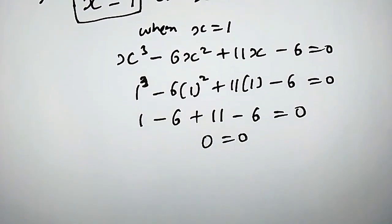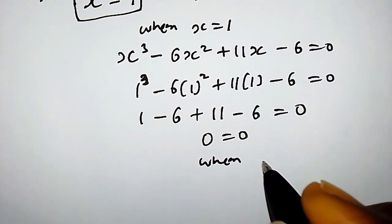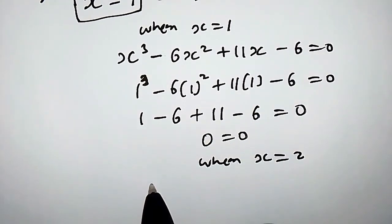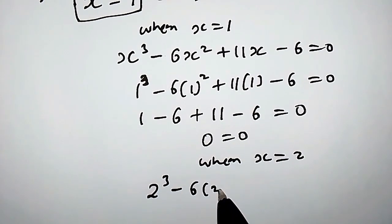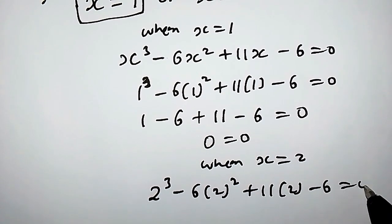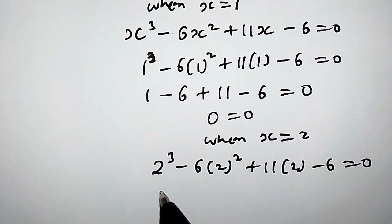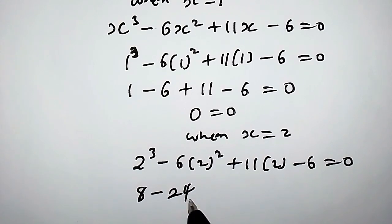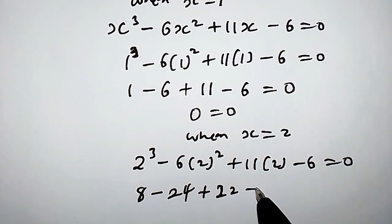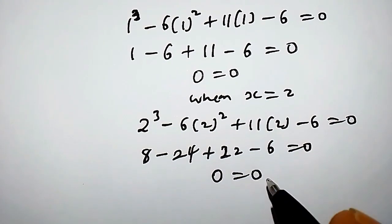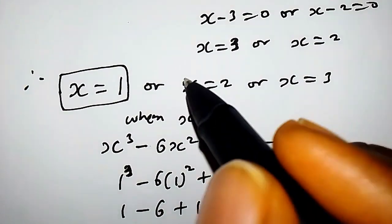Now let's check x equals 2. Plugging into the cubic: 2 to the power of 3 minus 6 times 2 squared plus 11 times 2 minus 6 equals 0. That is 8 minus 24 plus 22 minus 6, which equals 0. So x equals 2 is indeed our second solution.